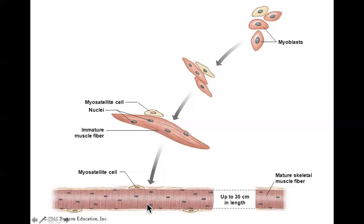The muscles in the extremity are formed in exactly the same way - there's just one difference. The only difference is that the myotome tissue from the somites migrates into the limb buds from nearby somites. Once it gets into the limb buds, exactly the same process occurs as in the segmented muscles, and then the muscle simply elongates as the limb grows. All the myoblasts are already there and they just go through this process and elongate as the limb grows.